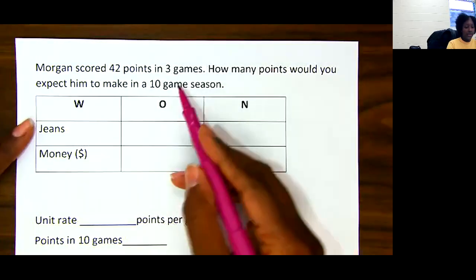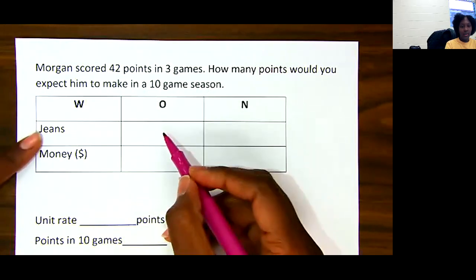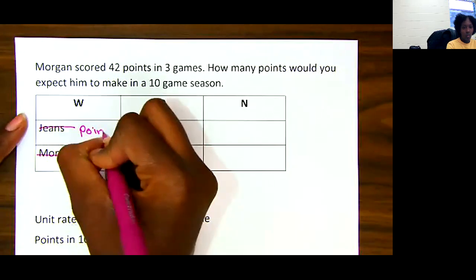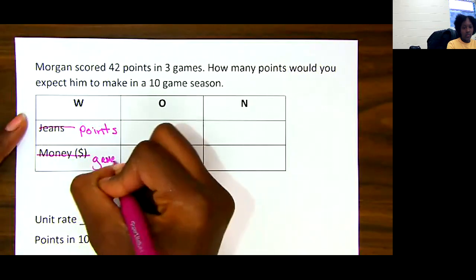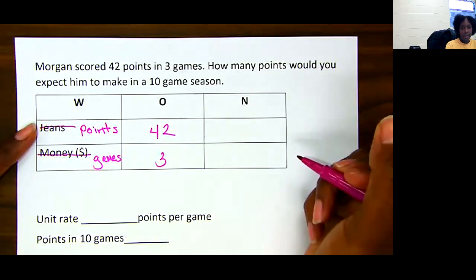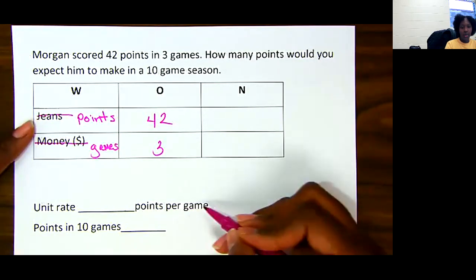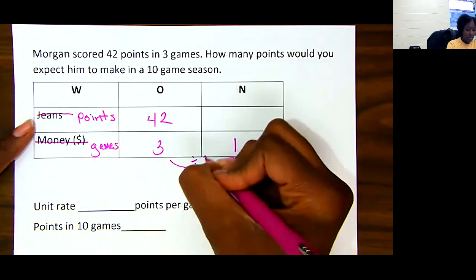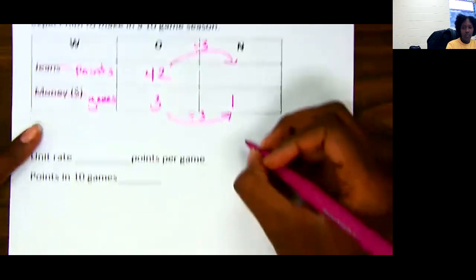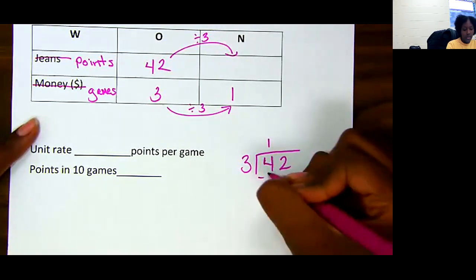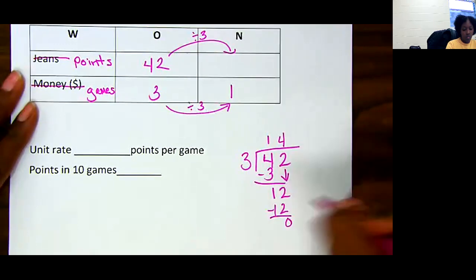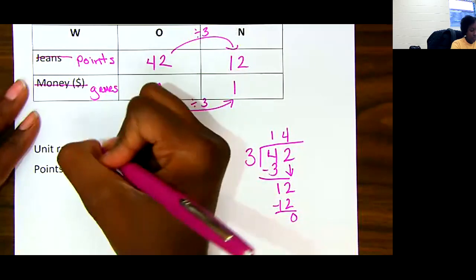All right, Morgan scored 42 points in 3 games. How many points would you expect him to make in 10 games? So we have 42 points in 3 games. They want to know how many points per game, so I need to figure out how many they score in one game. I would need to divide by 3 on both the top and the bottom. 3 divided by 3 gives me 1 here, so I'm going to do the same up here. 3 will go into 4 one time, 1 left over. Then we have 3 times 4 will give us 12. So 12 points in one game. 12 points per game.